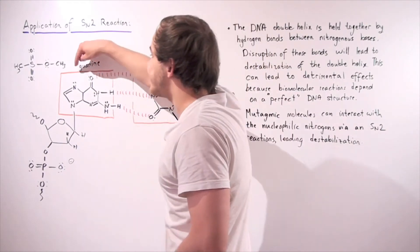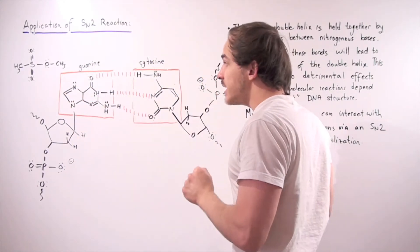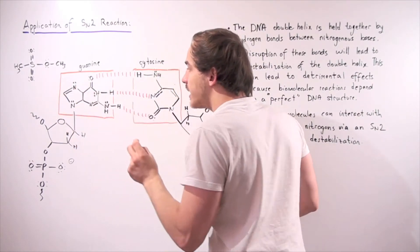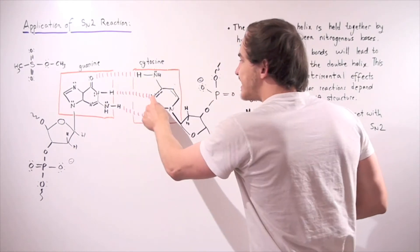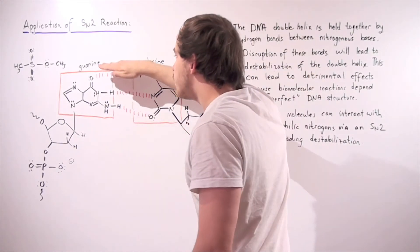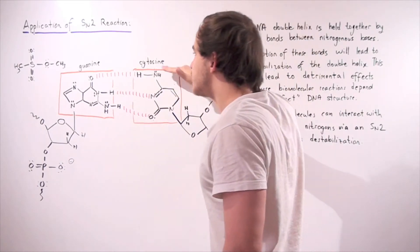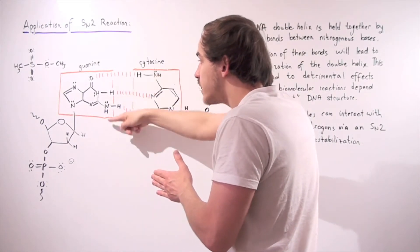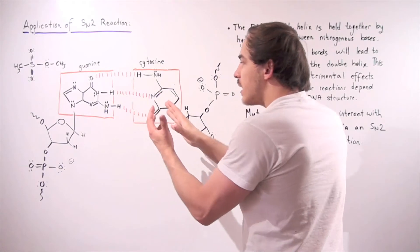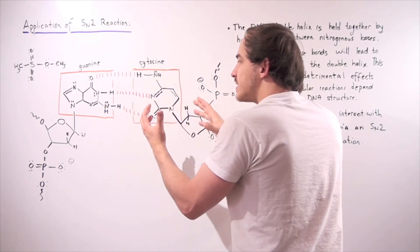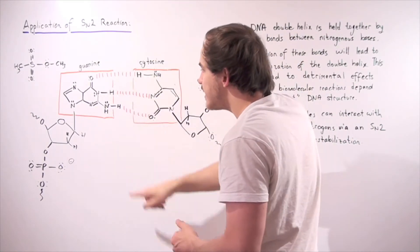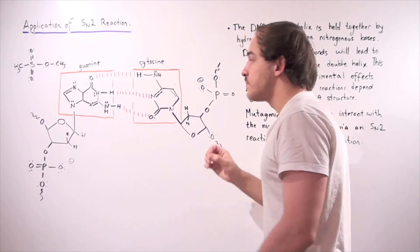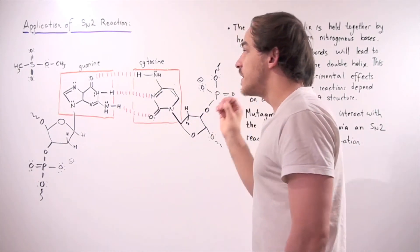Nothing really happens if a peripheral N atom gets alkylated. But if one of the N atoms involved in hydrogen bonding gets alkylated, one of those bonds will be destabilized and broken. If this happens across multiple bases, the entire molecule can separate, greatly disrupting the DNA structure.